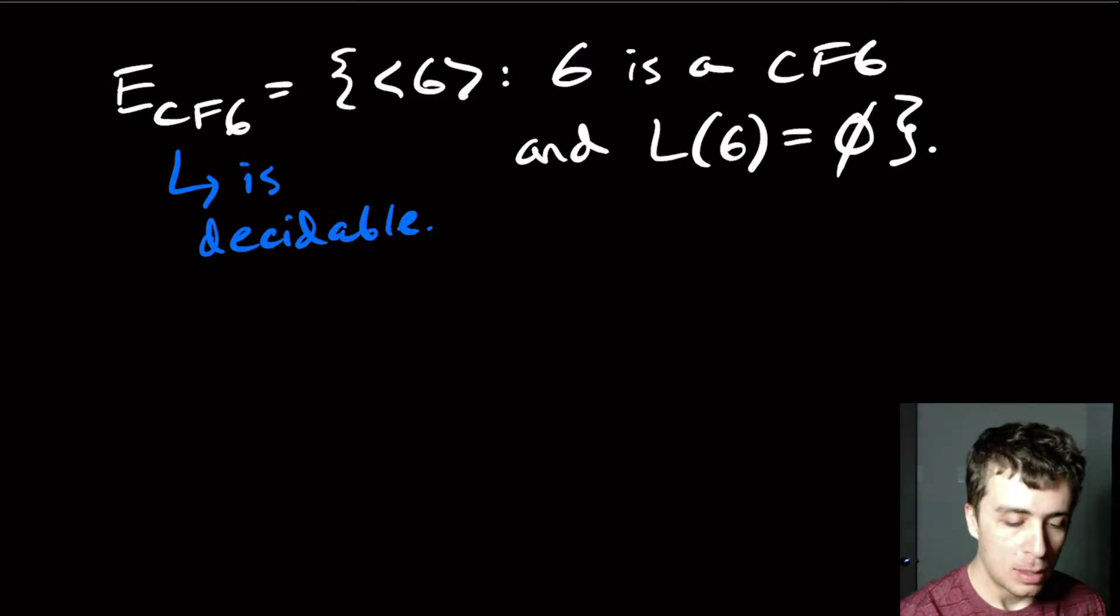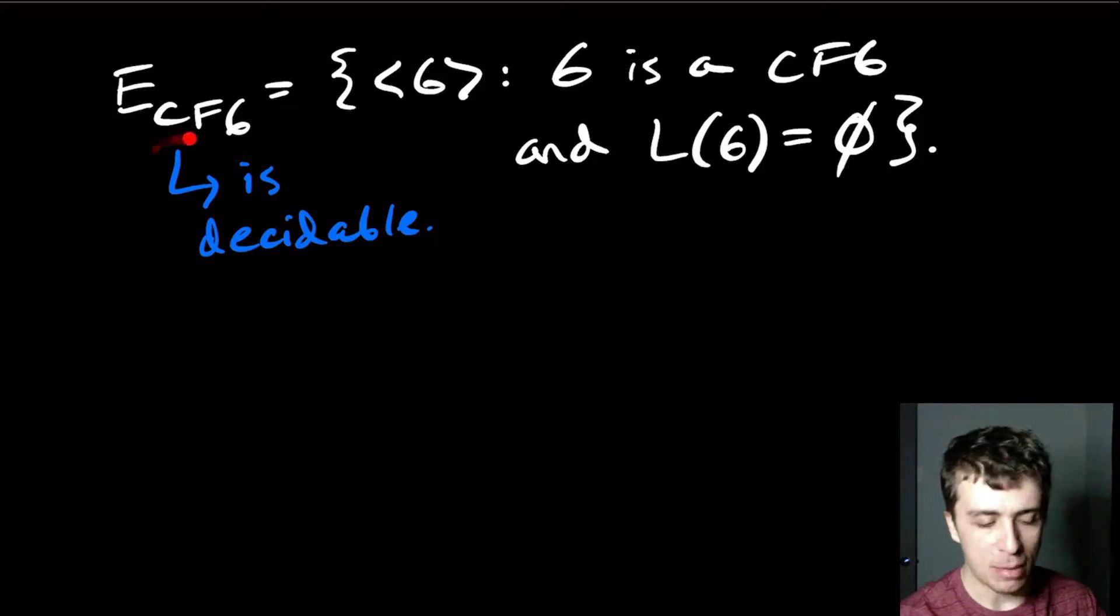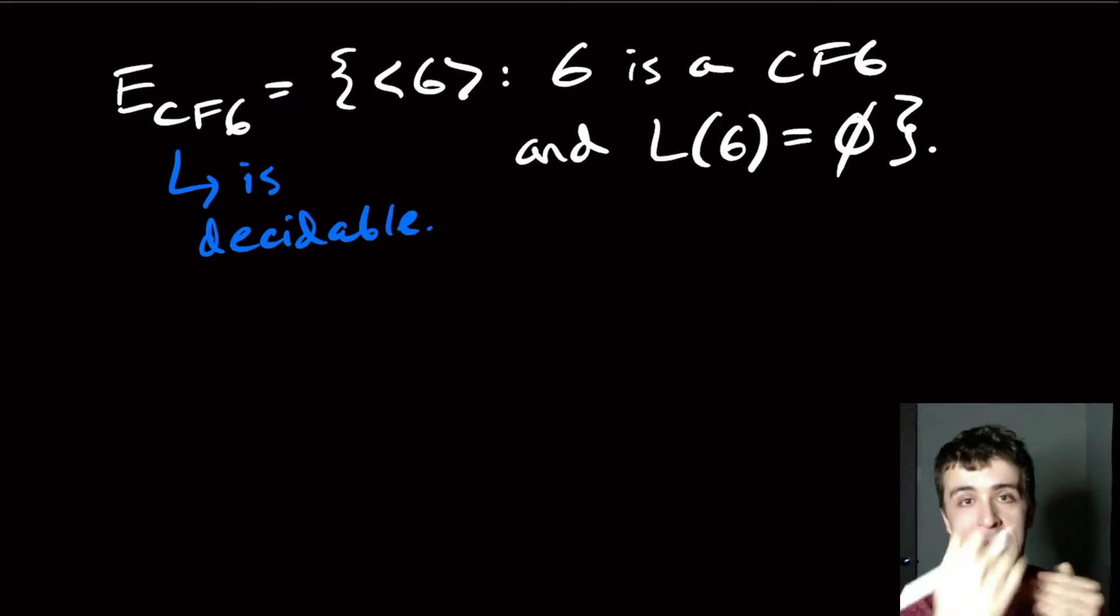So we can't use the same techniques that we used for E_DFA, where we just saw if we could reach one of the final states or not from the start state. You may think we can just convert this to a PDA and do the same thing. The difference is that the ability to apply a transition with a PDA is different depending on what's on the stack, and that is a temporal thing, which means that at a different point, not right now, but maybe later, I might be able to apply this transition and not now.